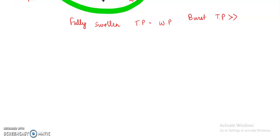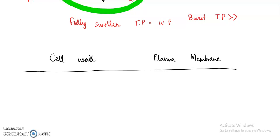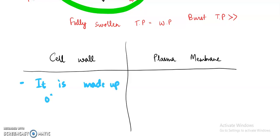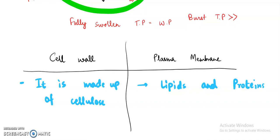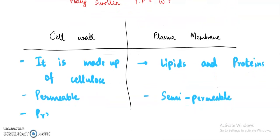Now let's compare cell wall with plasma membrane — there are important differences you must know. Cell wall is made up of cellulose, whereas plasma membrane is made up of lipids and proteins. Cell wall is permeable, whereas plasma membrane is semi-permeable — only few substances can pass through it, not all. Cell wall is present in plant cells and absent in animal cells.